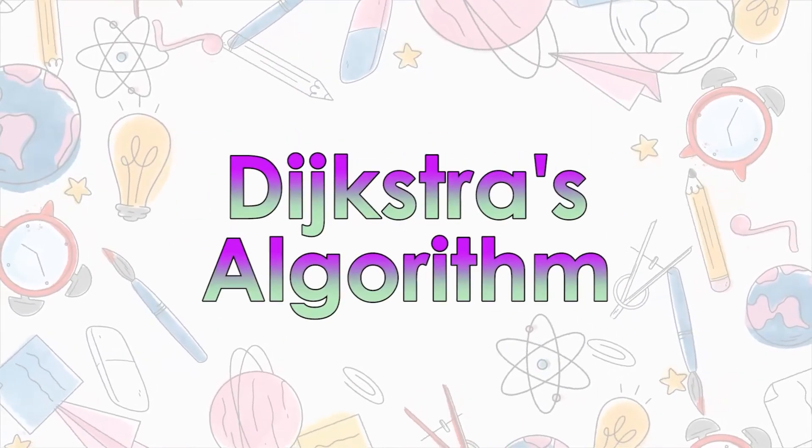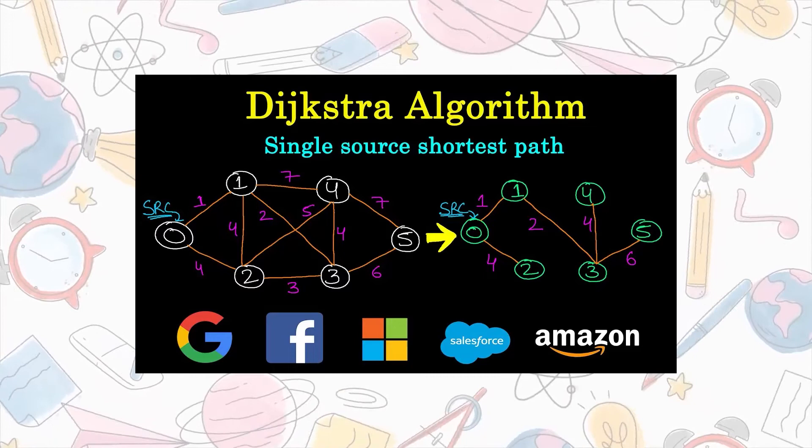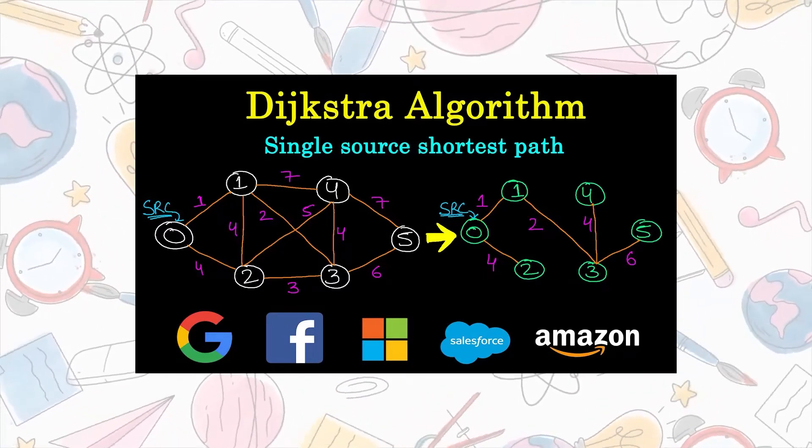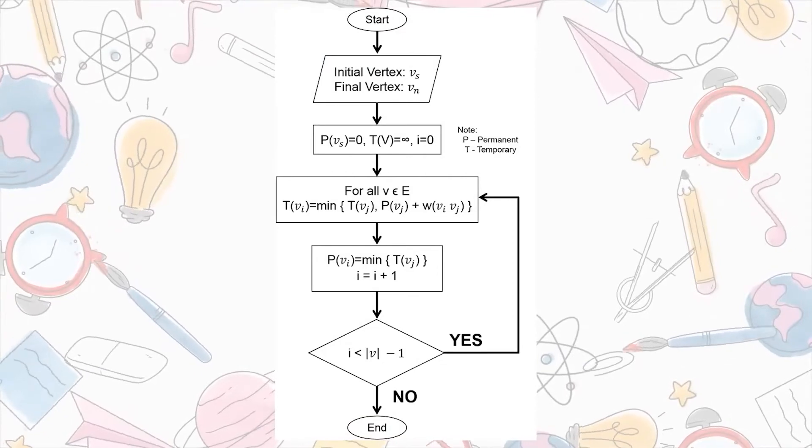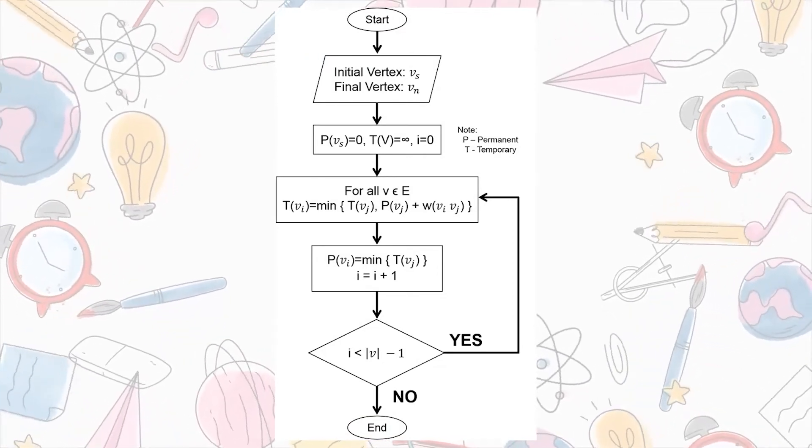Dijkstra's algorithm is an algorithm that solved the single source shortest path problem for a directed and undirected graph that has non-negative edge weight. In doing the Dijkstra's algorithm, here is a simple flowchart that will guide all of us in the steps until we find the shortest path.